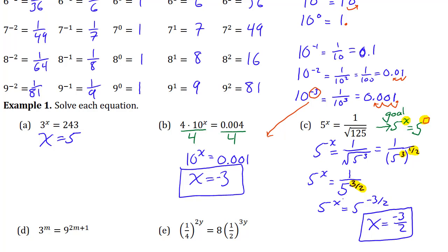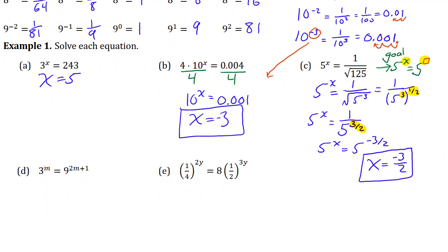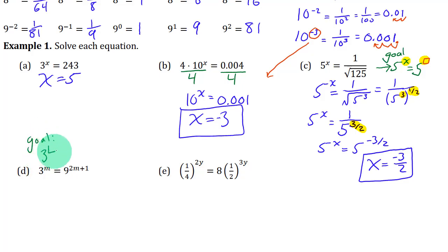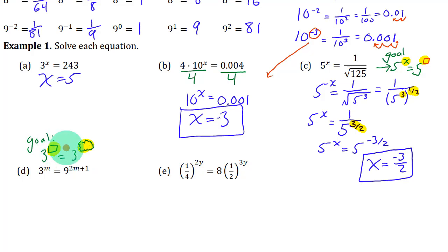Now let's look at part d. We have 3 to the power m and 9 to the power 2m plus 1. The technique we're going to use is: write the left side as 3 to a power, and the right side as 3 to some other power. And if you can do that, then those exponents must be the same — whatever value of m makes those exponents the same is going to make both sides of the equation equal.